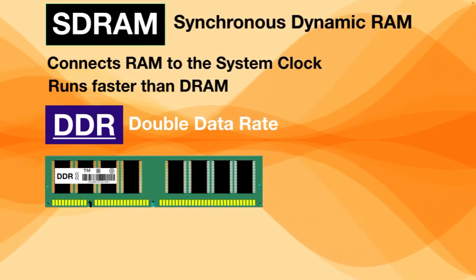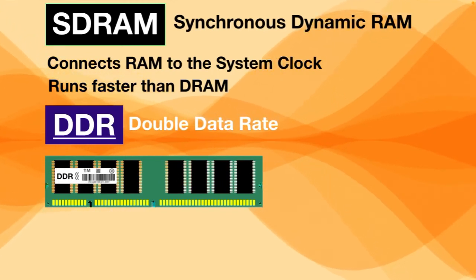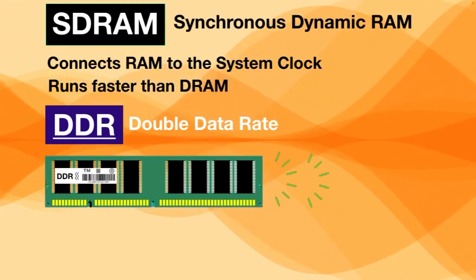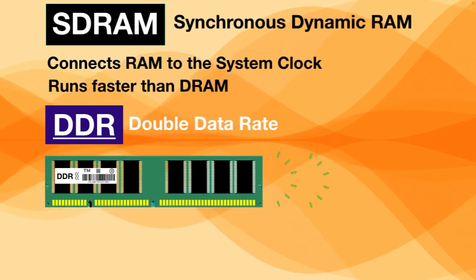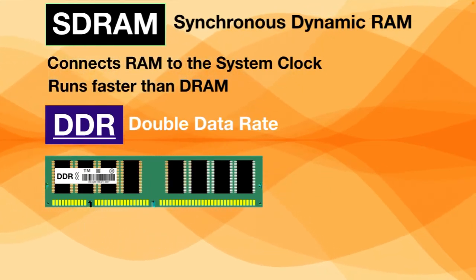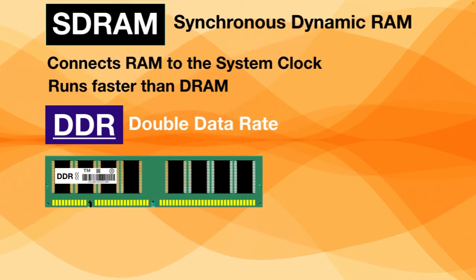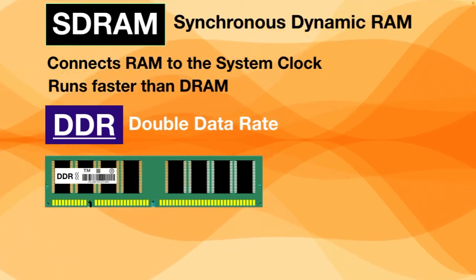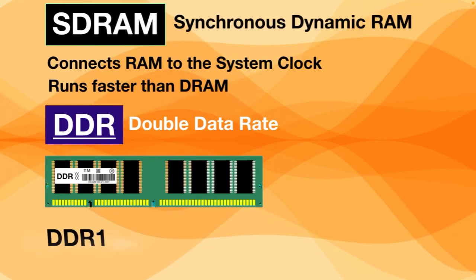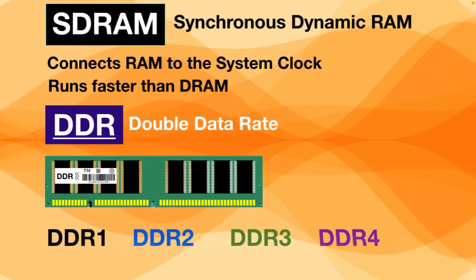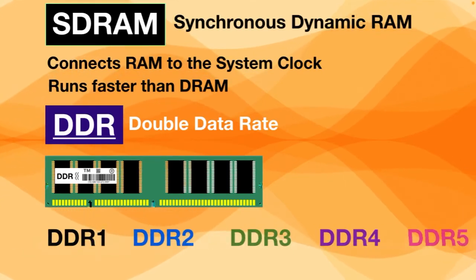With DDR, data is sent twice during each clock cycle, so you get speeds that are twice as fast, and it allows simultaneous multiple file transfers. There are various iterations including DDR1, DDR2, DDR3, DDR4, and even DDR5.